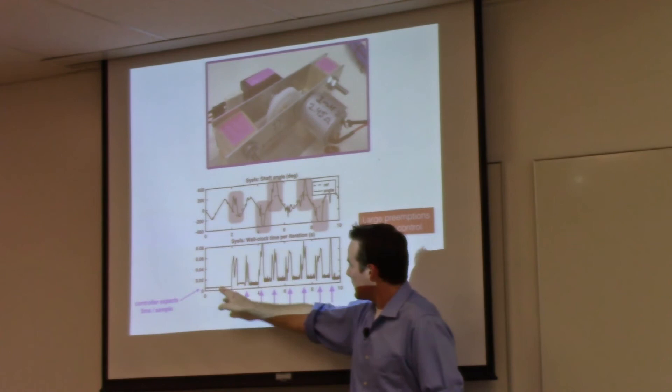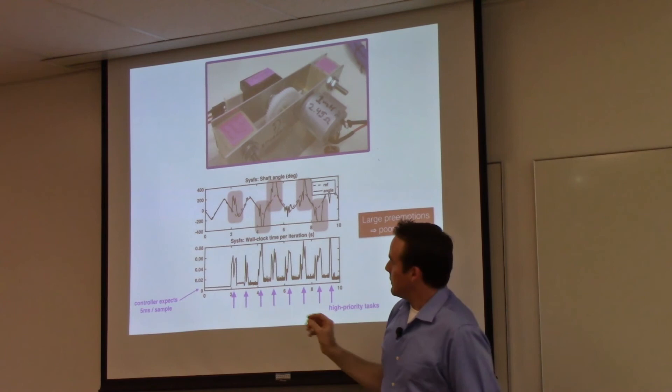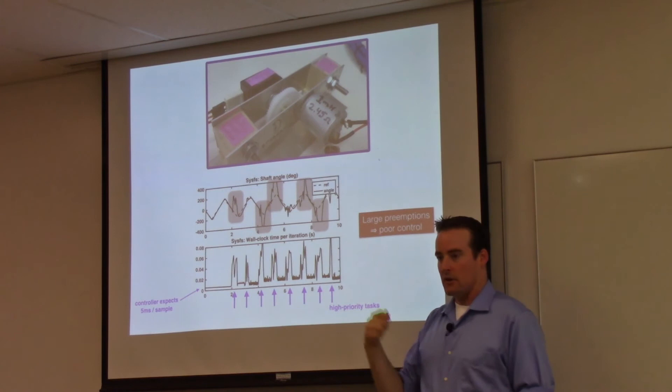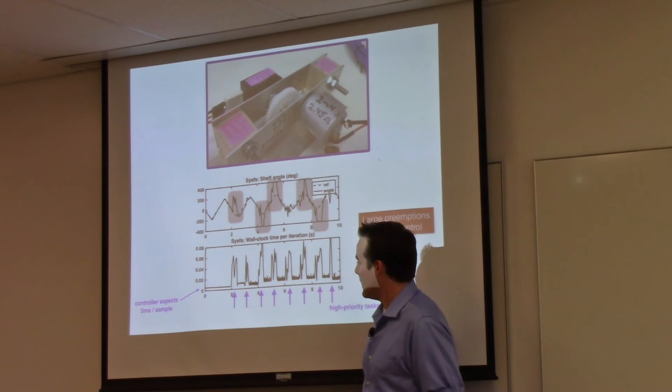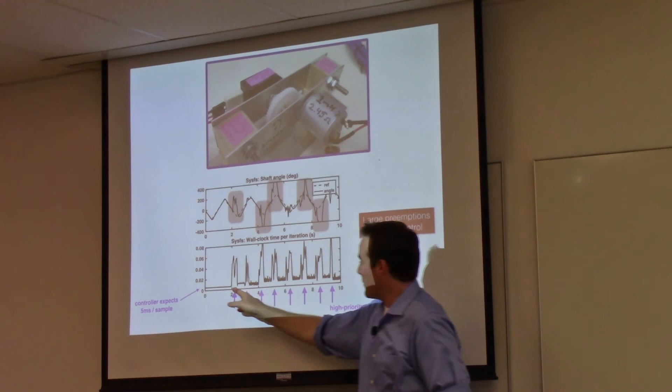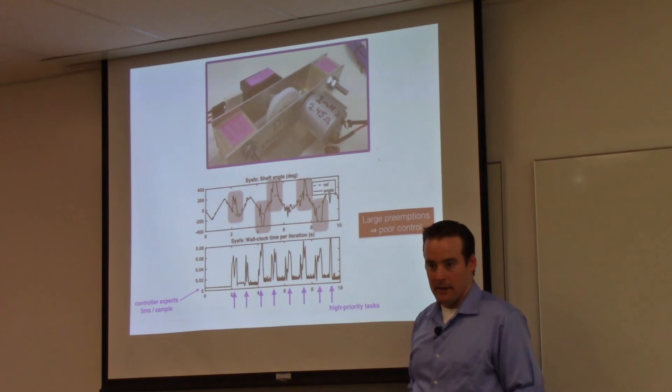While this is happening, time is on the x-axis. The y-axis here is the shaft angle in degrees. You can see that it's just trying to do a triangle wave here. But something happens that goes wrong. What goes wrong? Well, new high-priority tasks are coming online and requiring the CPU from our control task.